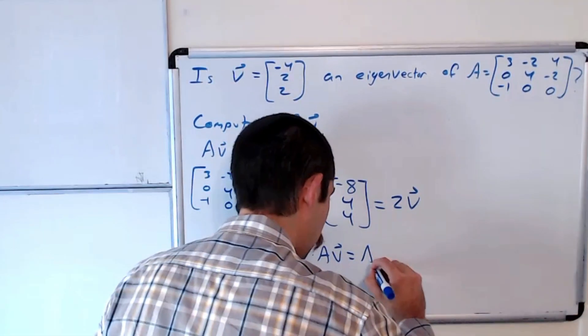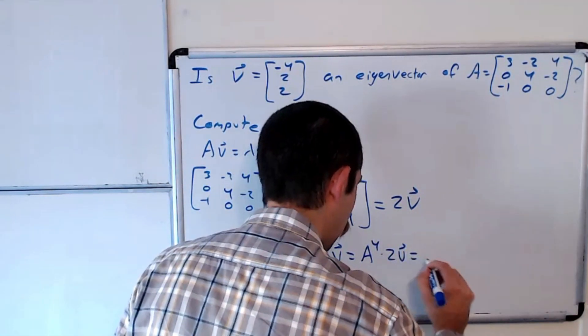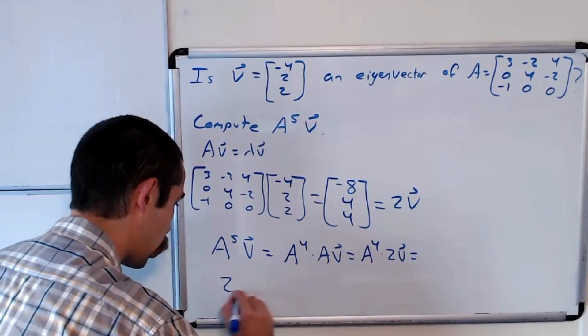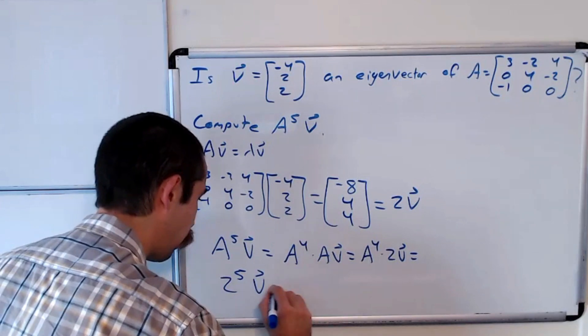So that's A to the 4th times 2 V, and we can continue this a bunch of times. It works out to be 2 to the 5th times V.